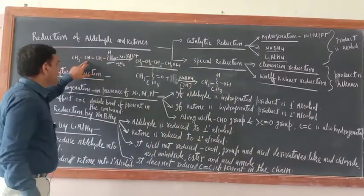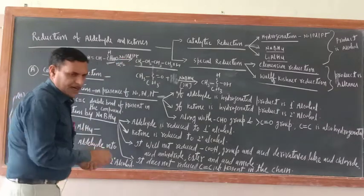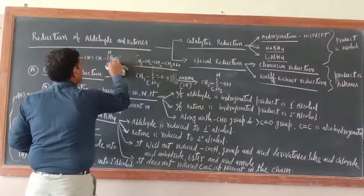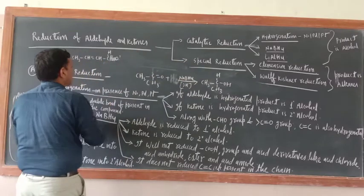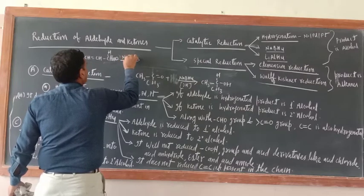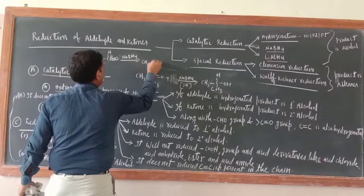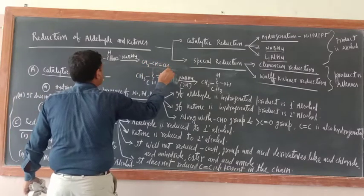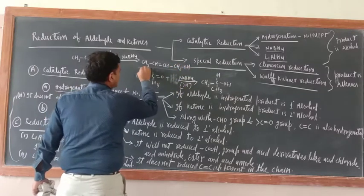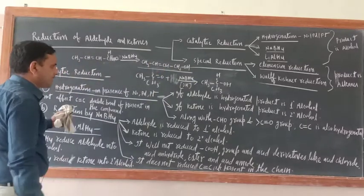To illustrate: if CH₃CH=CHCHO is treated with sodium borohydride (NaBH₄), the product is CH₃CH=CHCH₂OH — the double bond remains unchanged, only the CHO group is reduced to CH₂OH. The carbon-carbon double bond is not affected by sodium borohydride.